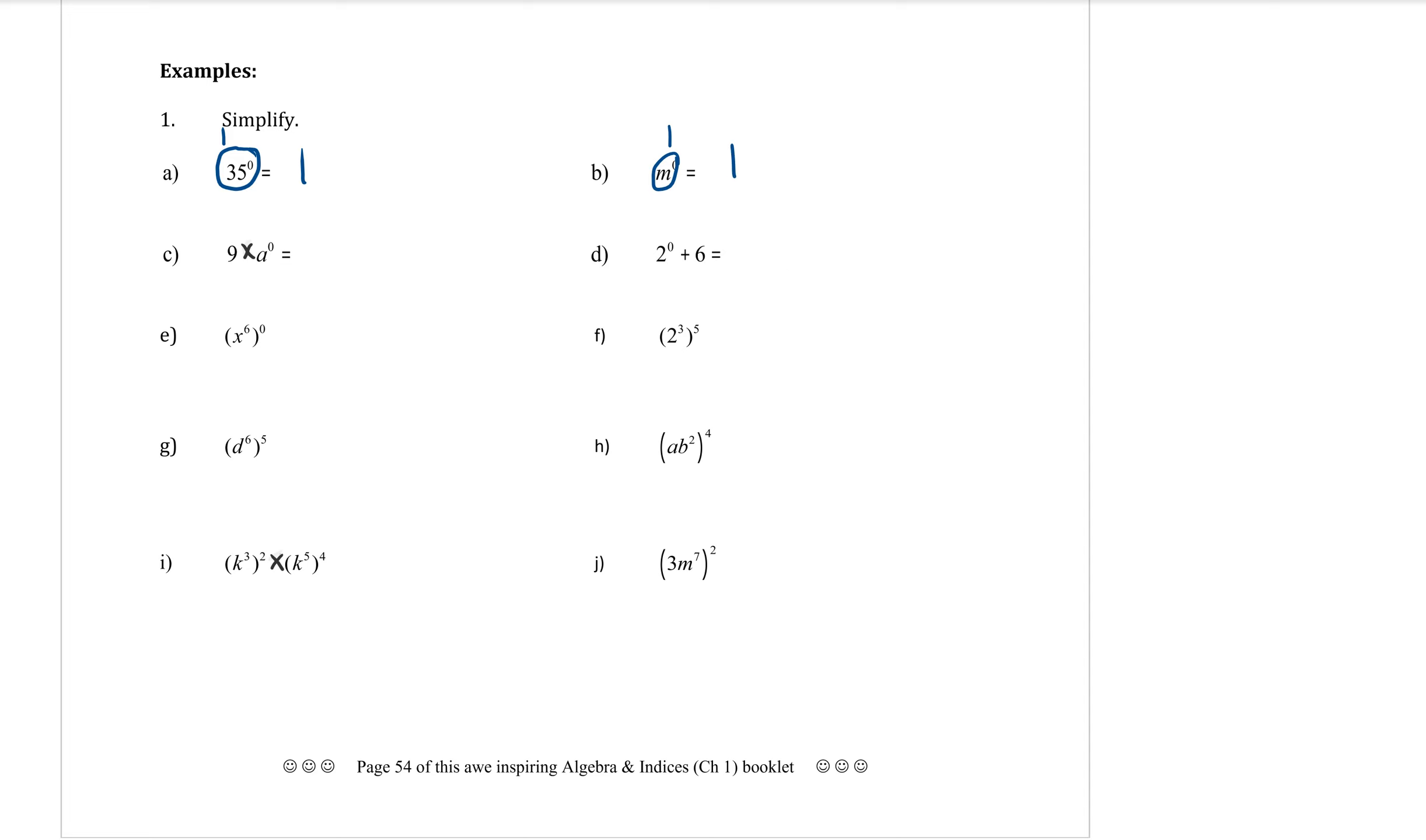Part C. This is where it gets different. Nine times A to the zero. The A to the zero, that's equal to one. But I still have nine times that. So nine times one equals nine for the final answer.